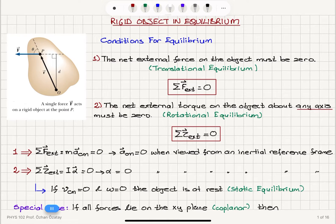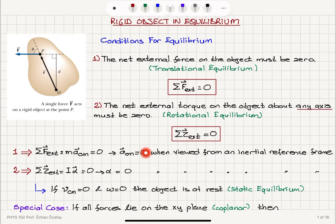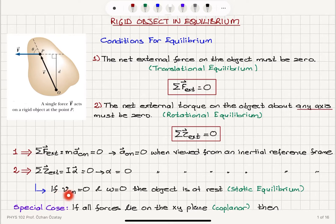So we have two conditions: translational equilibrium — the net external force acting on the object should add up to zero — and rotational equilibrium — the net torque acting on the object should add up to zero. That implies the acceleration of the center of mass is zero and angular acceleration is zero, meaning constant speed and constant angular speed. But if, in addition, the velocity of the center of mass is zero and angular speed is zero, the object is in static equilibrium — it is at rest.